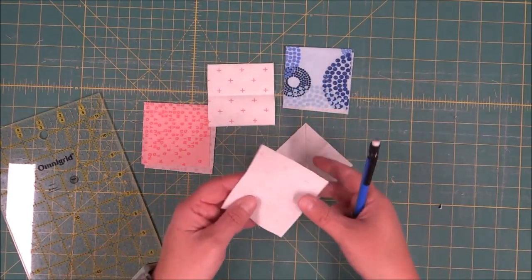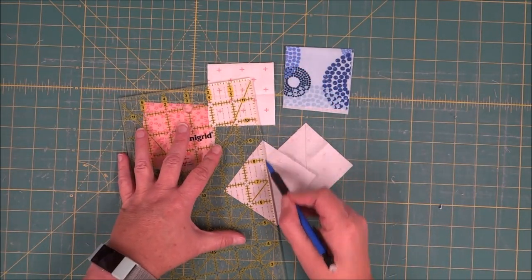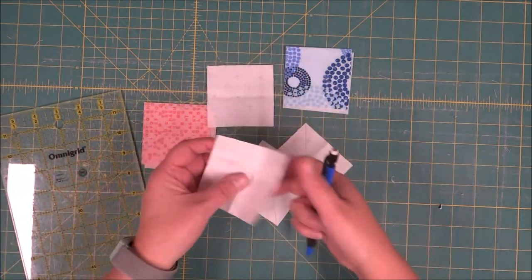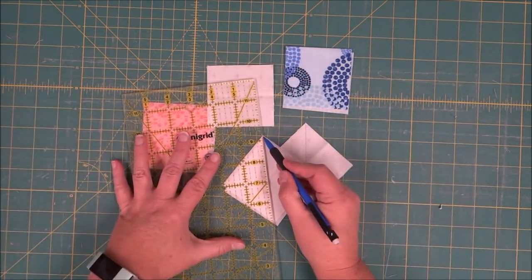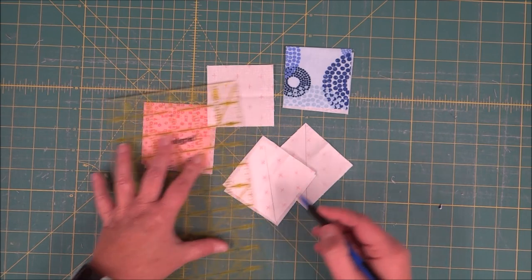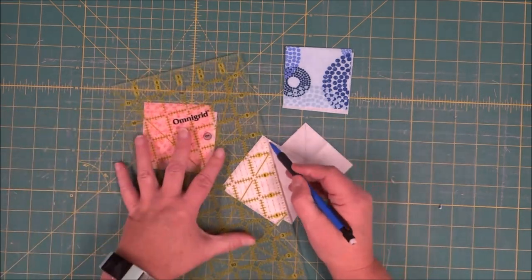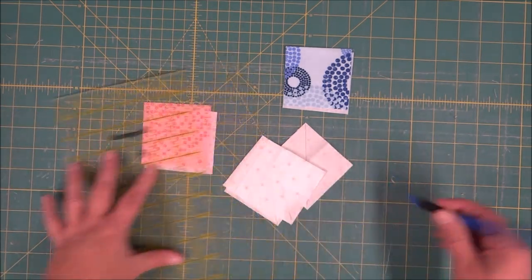This will give us two half square triangles for each of these and right now I'm making two blocks, so one is going to be pink and then the other one is going to be blue.